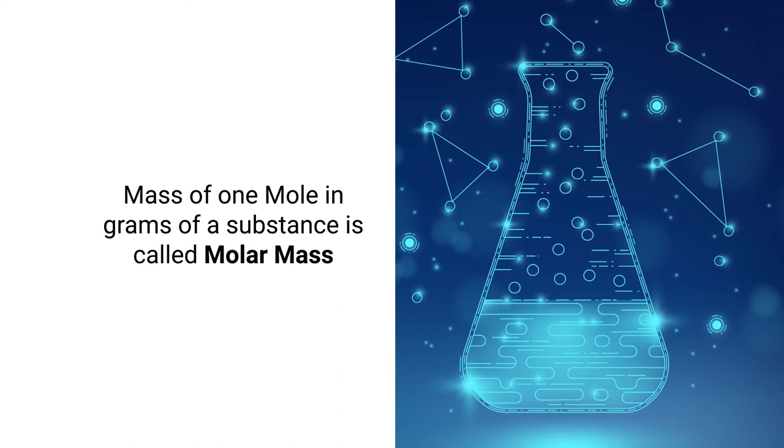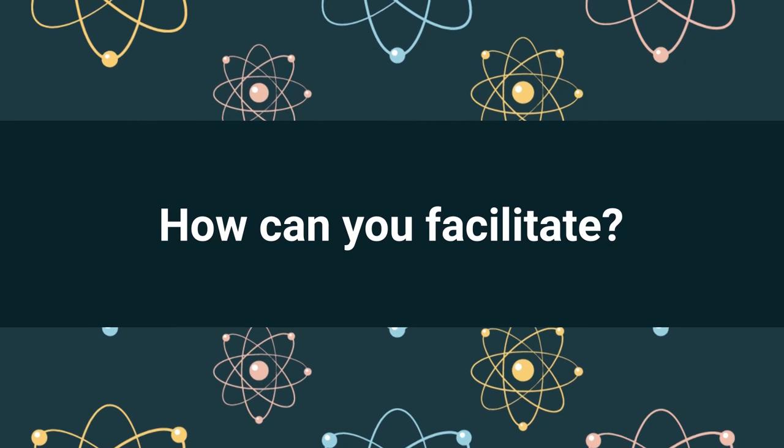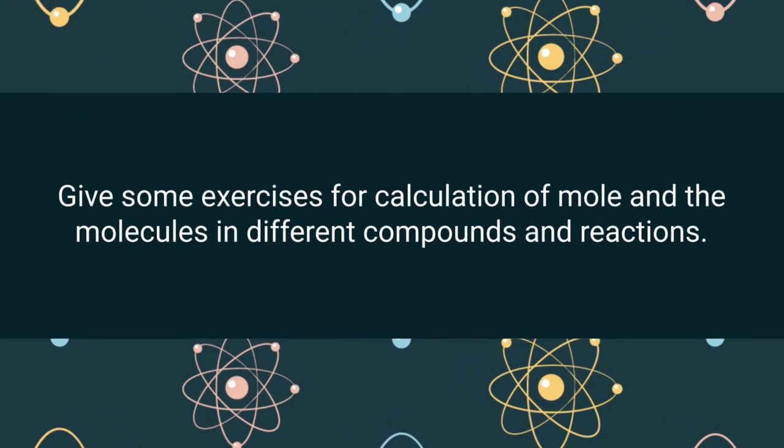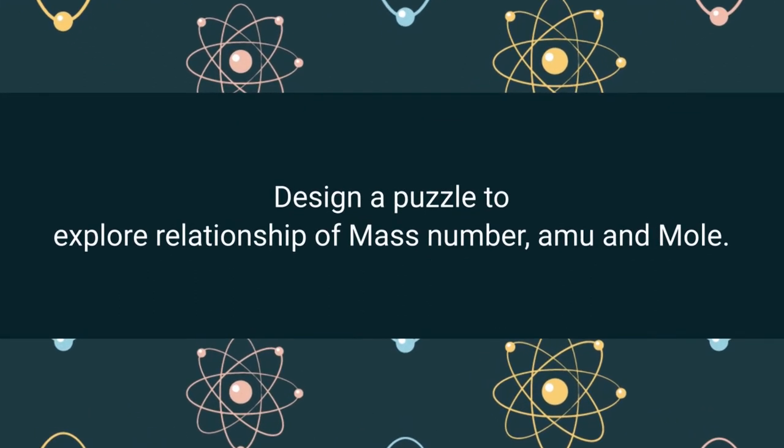One mole equals 6.022 × 10²³ atoms, ions, or molecules, and one mole also equals the atomic mass or molecular mass in grams. The mass of one mole in grams of a substance is called molar mass. The formula is: number of atoms = (given mass / molar mass) × Avogadro's number. You can give many exercises for the calculation of moles and molecules of different compounds and their reactions, or design puzzles to explore the relationship between mass number, atomic mass unit, and mole.